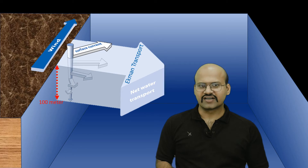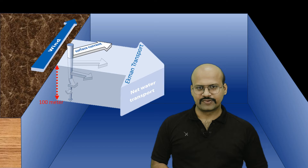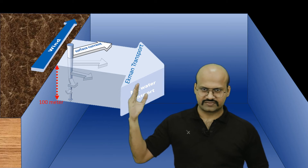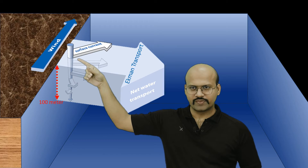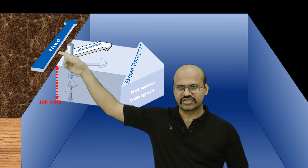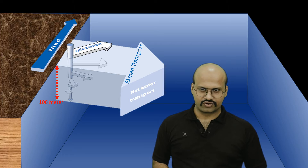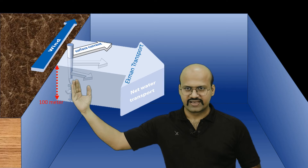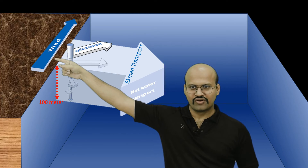If we consider all these layers and integrate their movements, the net transport of water is found to be perpendicular to the wind direction. While the surface water moves at 45 degrees to the wind, the net bulk water transport occurs at 90 degrees — perpendicular to the wind.